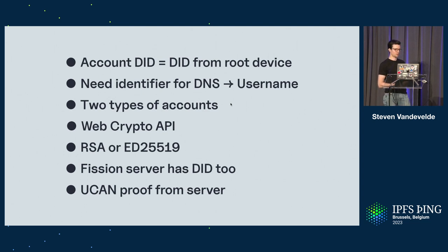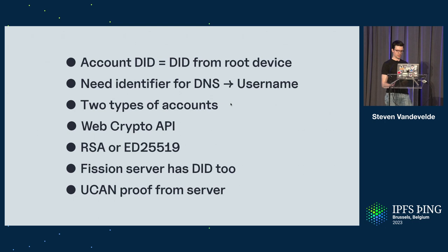In the current SDK, there's only one type of account — a first-class Fission account, which has full rights and lets you create apps. But in the future, there will also be an app account, which is tied to one specific app in the Fission ecosystem. DIDs are generated using the WebCrypto API, which is either RSA or Edwards Curve. The Fission server also has a DID. So every time we contact the Fission server, for example when registering a new account, we create a UCAN and the audience is the DID of the Fission server. When registration is successful, we get the UCAN proof from the server, which is also offline proof that we have a Fission account.